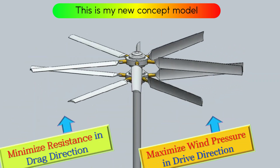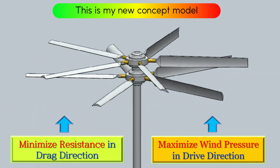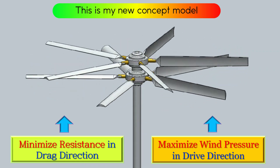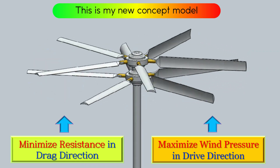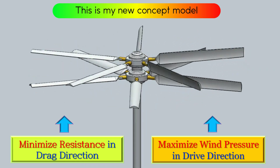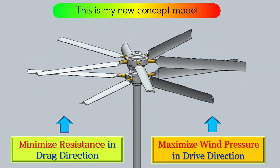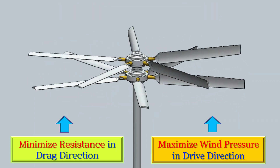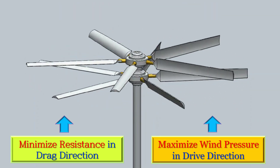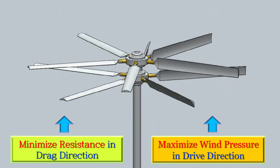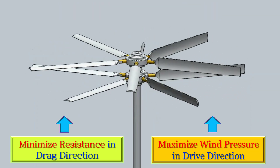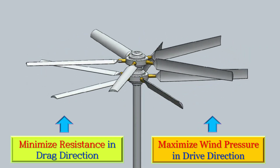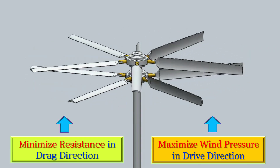Therefore, the following mechanisms of wind power generators were designed to maximize the driving torque of wind turbines. This design minimizes wind resistance in the drag direction while maximizing pressure in the driving direction, ensuring optimal efficiency.